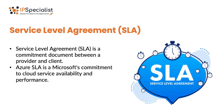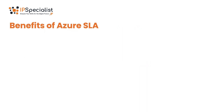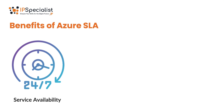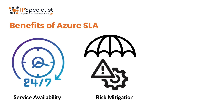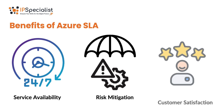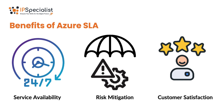It outlines the level of service reliability that customers can expect from Azure. Now let's take a look at some of the major benefits offered by Azure SLA. First is Service Availability — Azure SLA guarantees a certain level of service availability, ensuring that Azure services are operational and accessible to customers when they need them. Next is Risk Mitigation — the Azure SLA provides a mechanism for compensating customers in case Azure fails to meet its service availability targets. Lastly, Customer Satisfaction — customers can trust that Azure takes their needs seriously and prioritizes delivering high-quality services that meet their requirements.